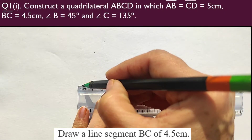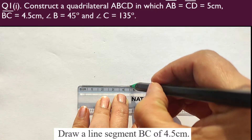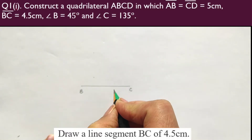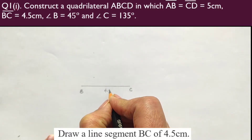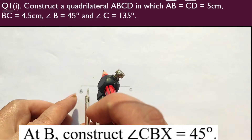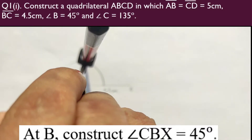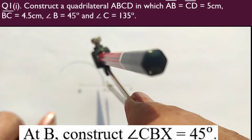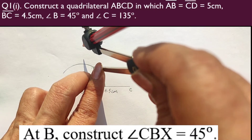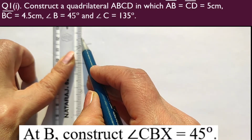First, I make BC equal to 4.5 cm. I mark the points B and C such that BC is 4.5 cm. Now my next step is to construct an angle of 45° at point B. For that, I will first construct a 90° angle. I know that using 60°, then 120°, and bisecting between 60° and 120°, I get an angle of 90°. So I have got the 90° angle.